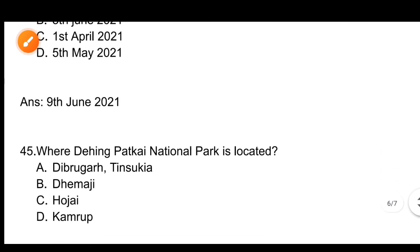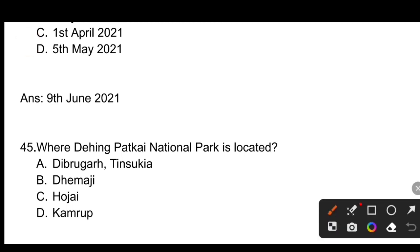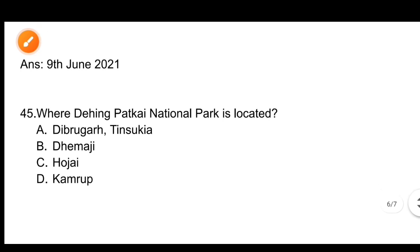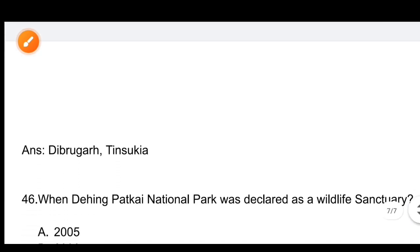Question number 45: Where is Dihing Patkai National Park located? Options: A) Dibrugarh and Tinsukia, B) Majuli, C) Hojai, D) Kamrup. The correct answer is A, Dibrugarh and Tinsukia. Dihing Patkai National Park is located in Dibrugarh and Tinsukia.